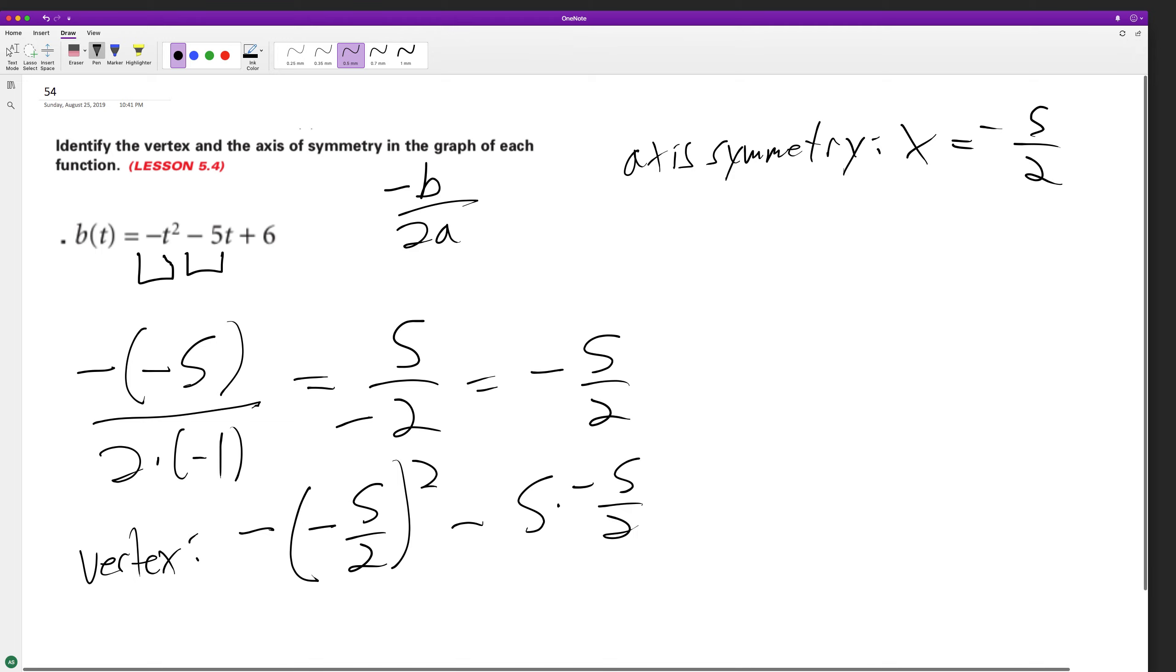halves plus 6. We end up with this: negative times negative is positive, but we have the negative on the outside. So negative 25 fourths. It ends up being negative 5 times negative 5, so plus 25 over 2 plus 6. This equals negative 25 over 4 plus 50 over 4 common denominators plus 6. That's 25 over 4 plus 24 over 4, so we get 49 over 4.